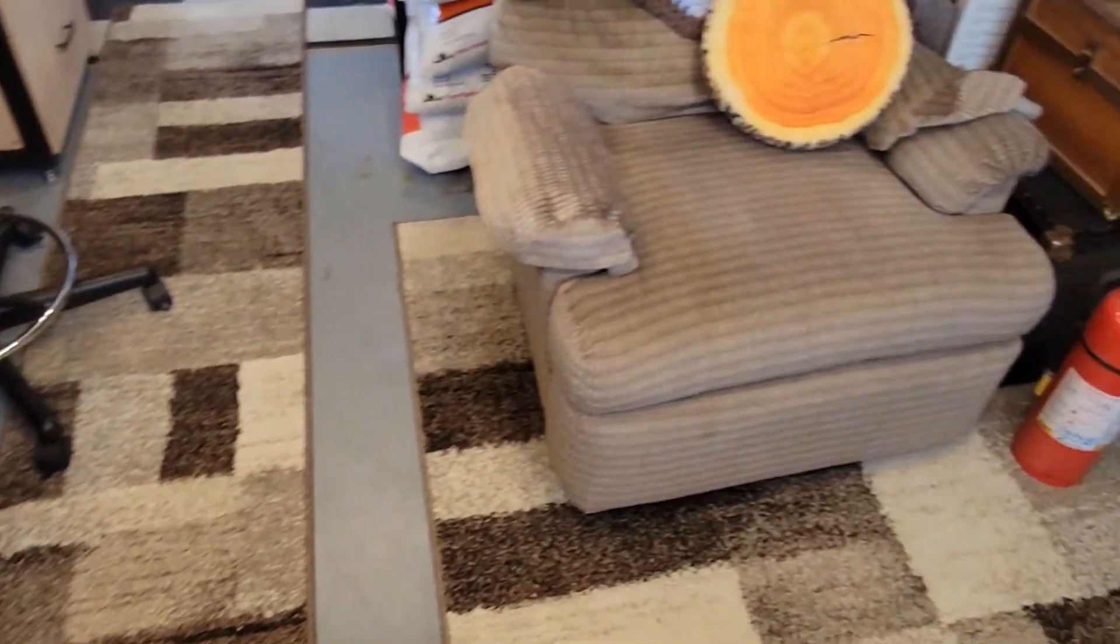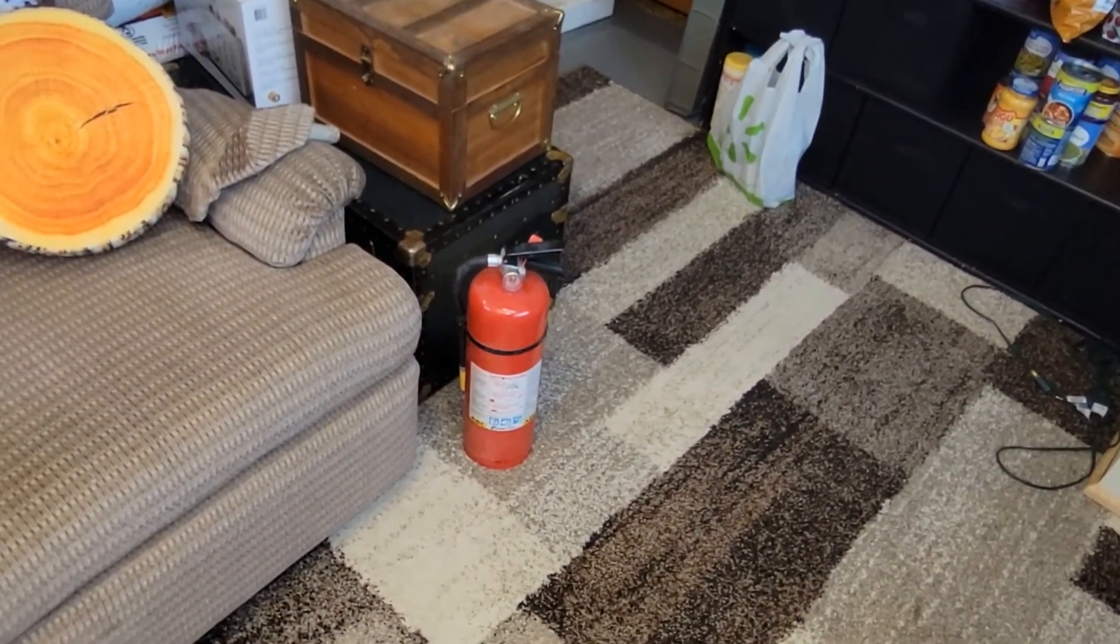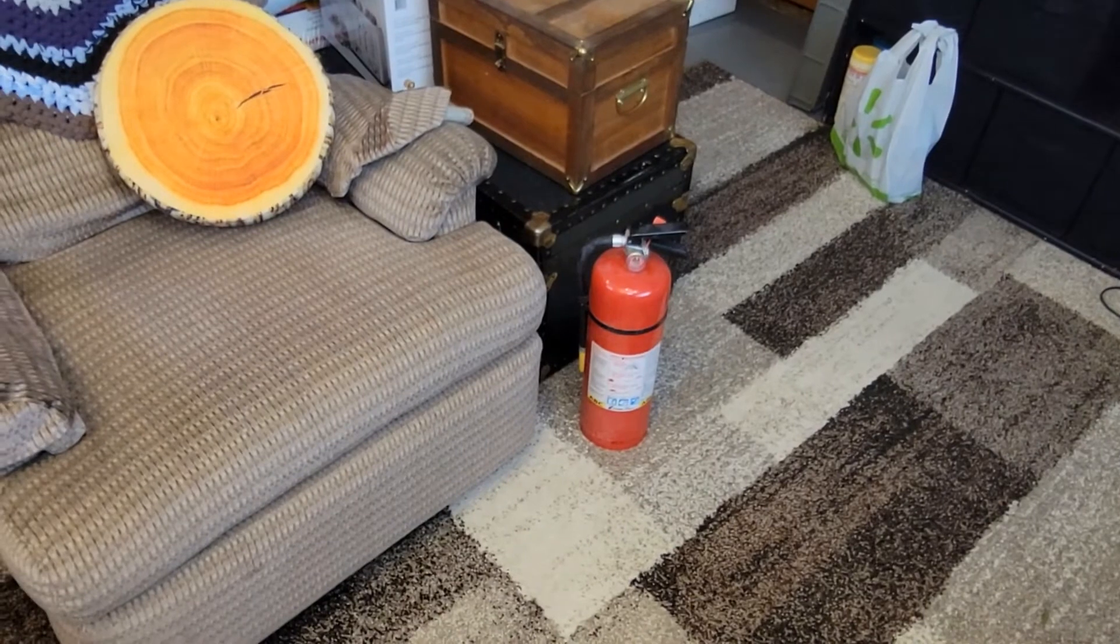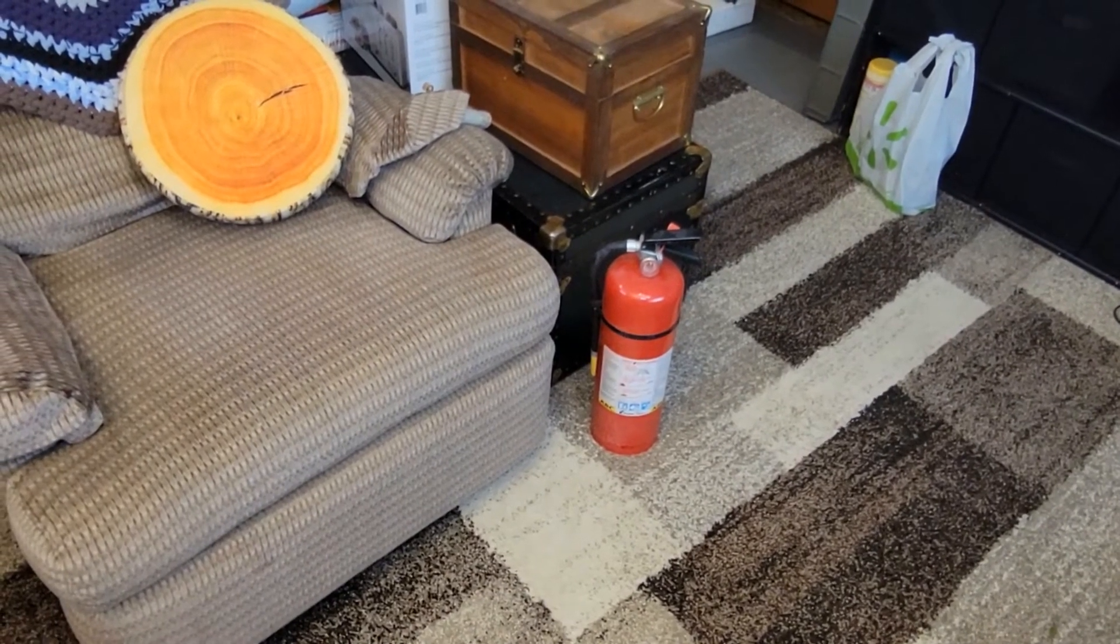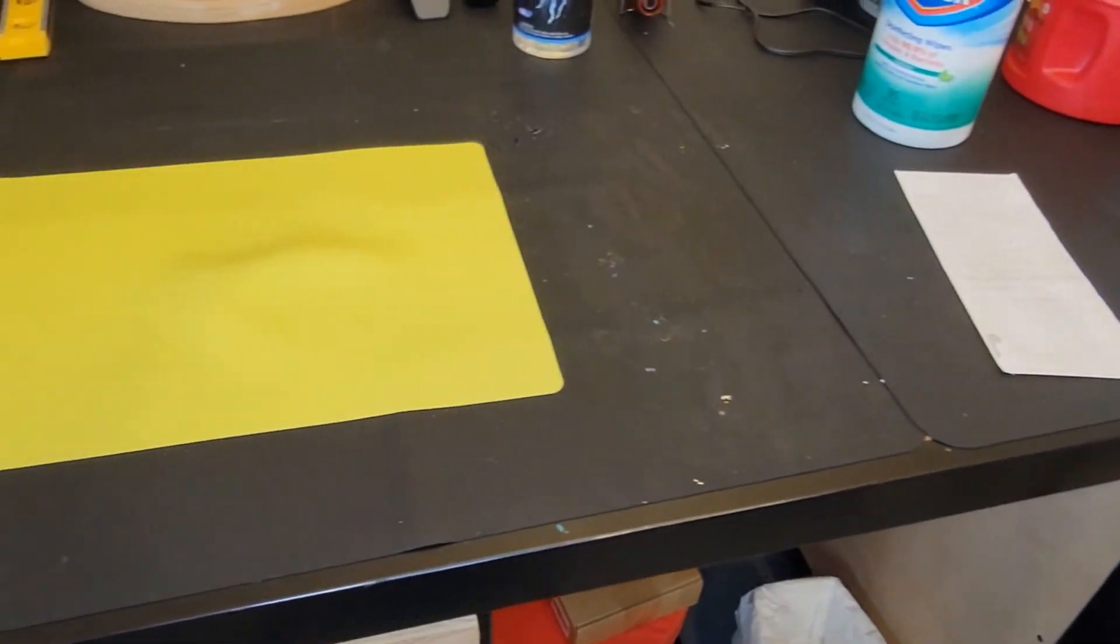Okay, the other super important thing, and I cannot emphasize this enough because I've had a fire, is a fire extinguisher. Do not have it right by your work surface. Have it at least six feet away. If you have it right by your work surface and then you have a fire at your work surface, you cannot get to your fire extinguisher.